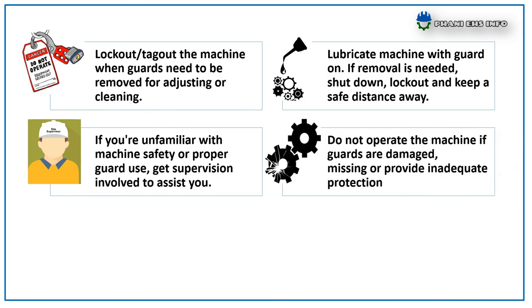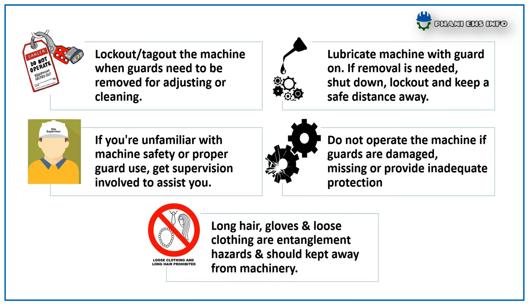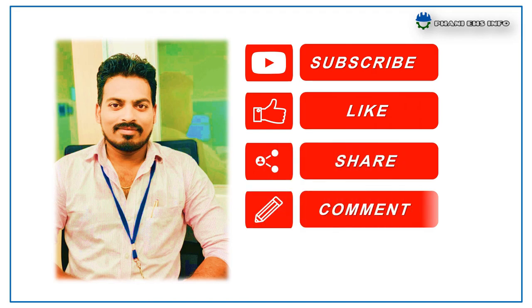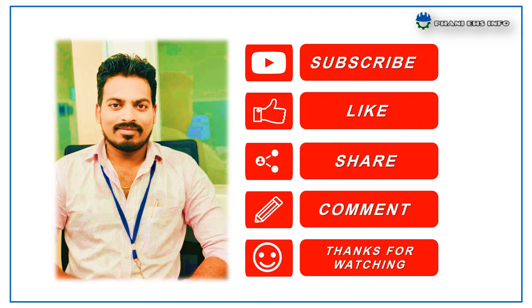Do not operate the machine if the guards are damaged, missing, or provide inadequate protection. Long hair, gloves, and loose clothing are entanglement hazards and should be kept away from machinery. This concludes the topic of machinery safety. Thanks for watching and have a safe day.